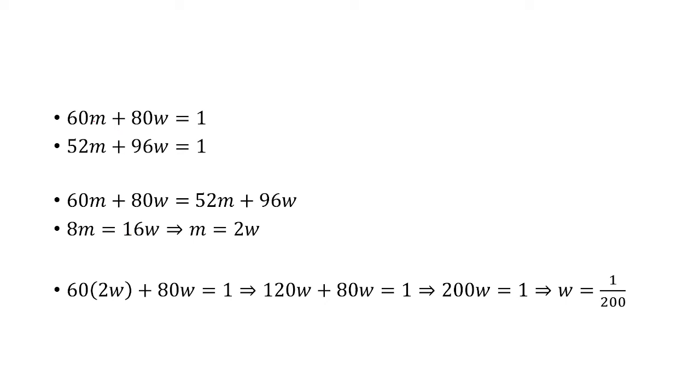Now I'm going to plug that into the first equation. So we have 60 times 2w plus 80w equals 1. So then it becomes 200w equals 1, and so w is 1 over 200.